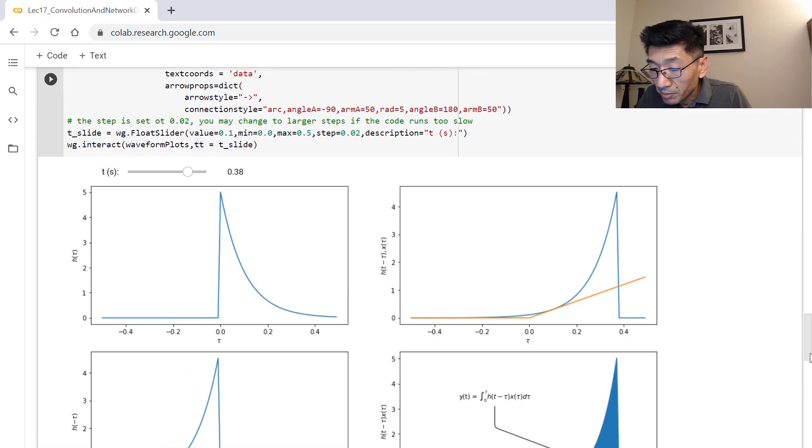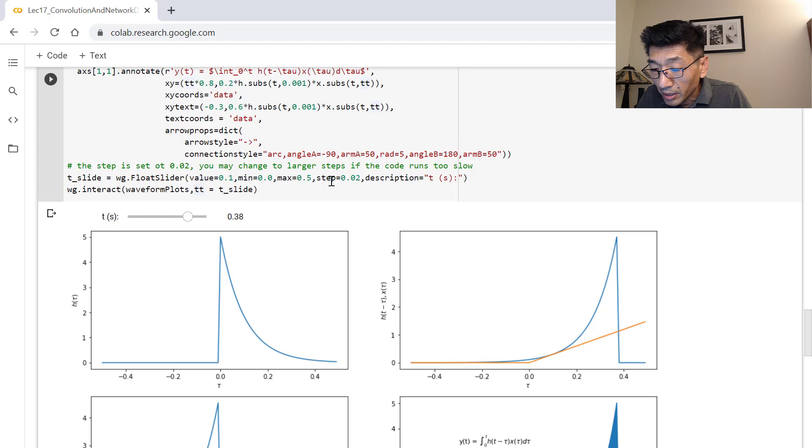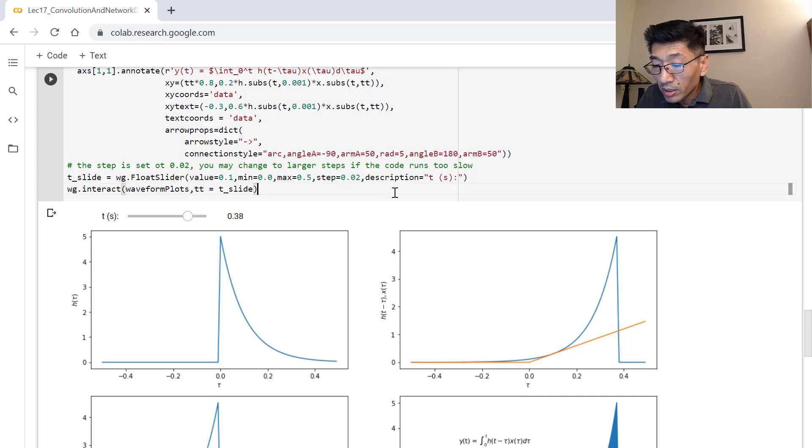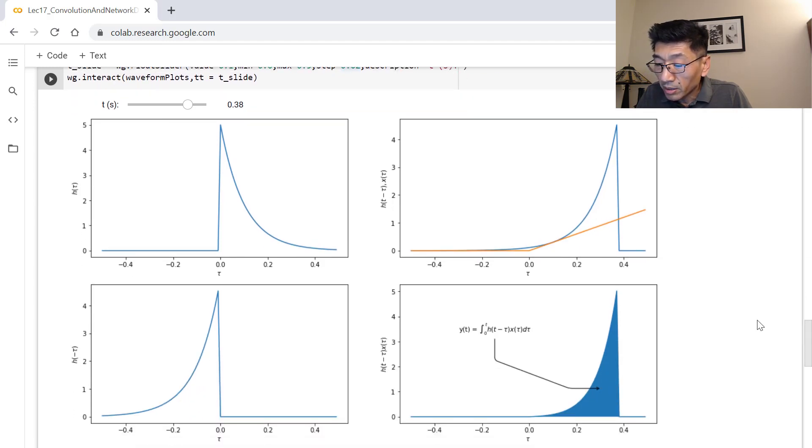And if you want to change the step size, right now I set the step size as 0.02, you can change that to a different value. So this is the example, the plot of our example. I hope the graphic interpretation will give you a little more intuitive understanding of this integral, the convolution integral.